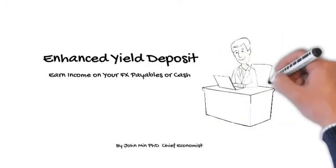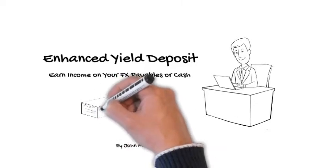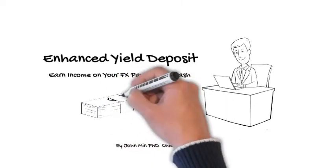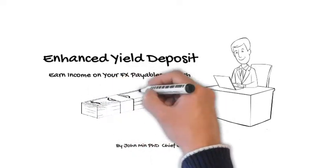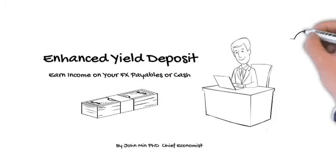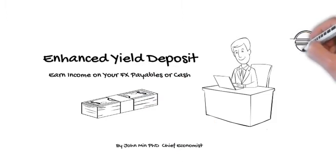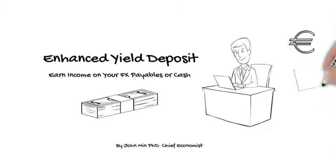Let's say you're running a business — it could be import, export, or manufacturing — and you're holding onto U.S. dollar cash in your bank account, earning 0% interest. On the other hand, you have a payable obligation in foreign currency; in this case, let's say the euro.